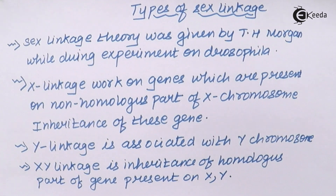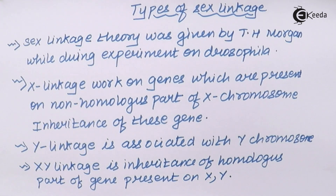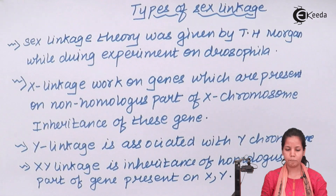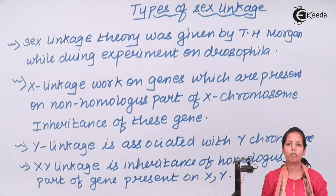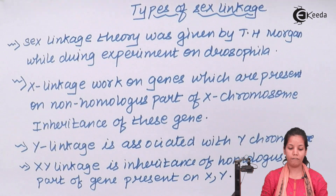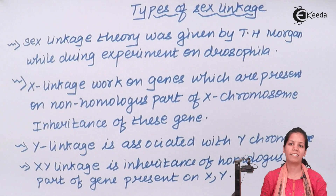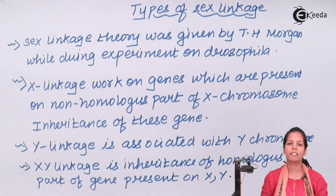In this part of the chapter we learned about types of sex linkages given by Morgan's Drosophila experiment. These linkages play a very crucial role in disease development, Mendelian and chromosomal disorders. I hope students are very clear with this concept. Thank you.